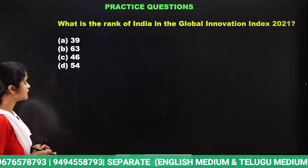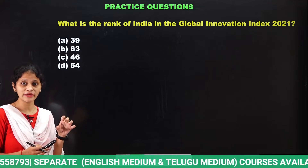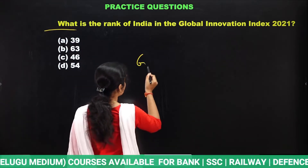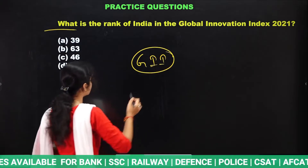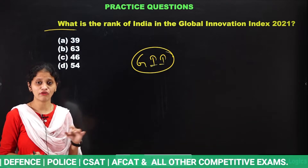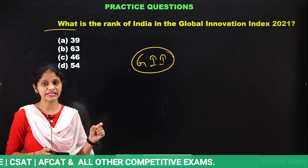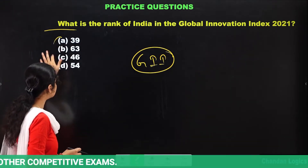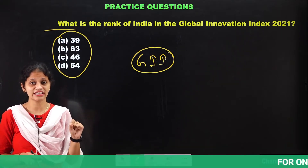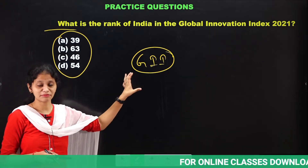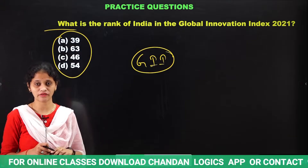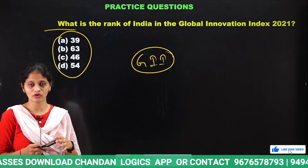First we will look into practice questions based on the topics discussed in our previous class. The first question is regarding the Global Innovation Index (GII). What is the rank of India in the Global Innovation Index 2021? India stands at a certain rank, and you also need to remember the seven pillars considered for India's score in GII. Once you revise the seven pillars, then look at the options: 39, 63, 46, or 54.